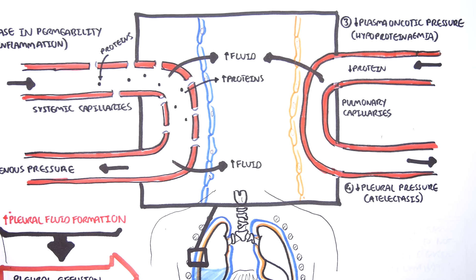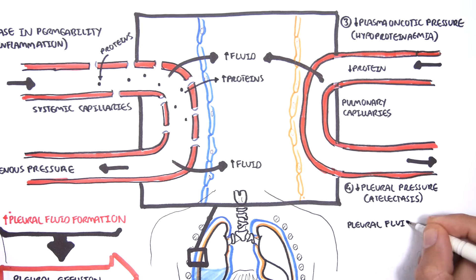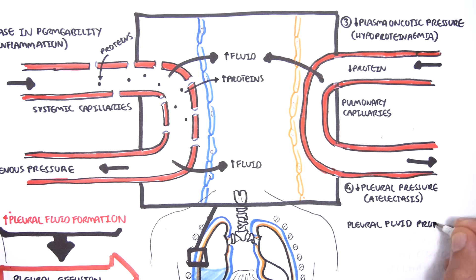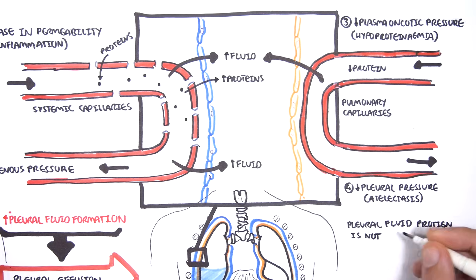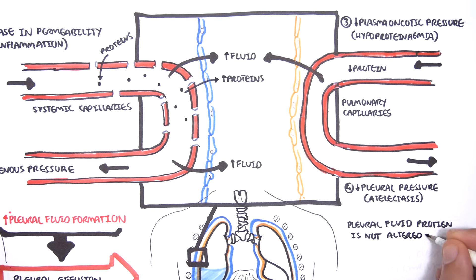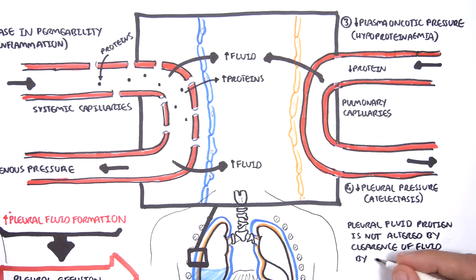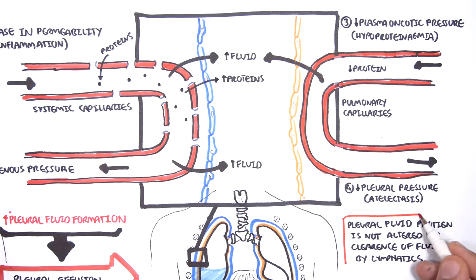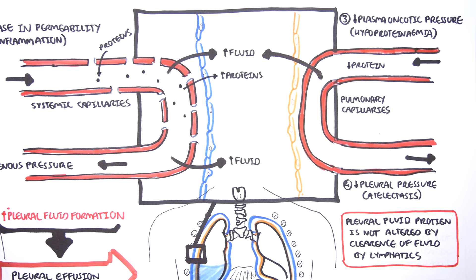Note that in some of these examples, proteins also move into the pleural space, causing an increase in protein levels in the pleural fluid. Pleural fluid protein levels are not altered by clearance of fluid by the lymphatics. This is very important as protein levels in pleural fluid help differentiate between two types of pleural effusions.